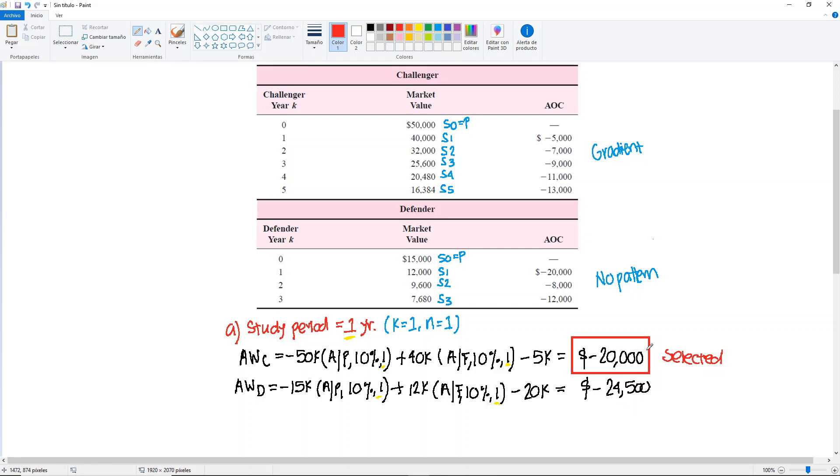because it has the numerically largest number. And now we do the same for part B, but now it's a study period of three years.